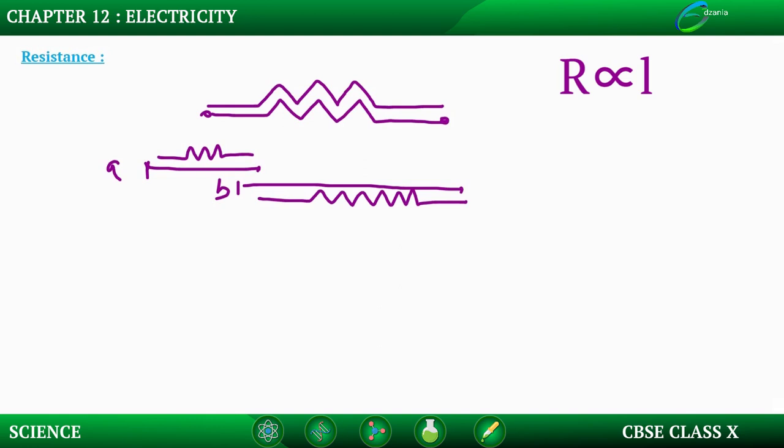Similarly will be the case with the cross-section of conductor. If current is passing through a conductor of certain cross-section and if the cross-section of that conductor is doubled, imagine a thin conductor to be a single lane road and a thick conductor to be the double lane road.